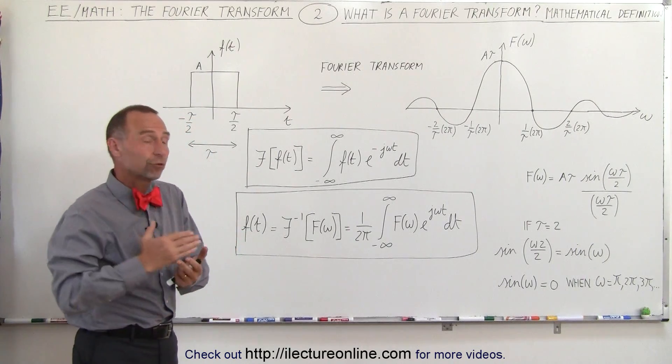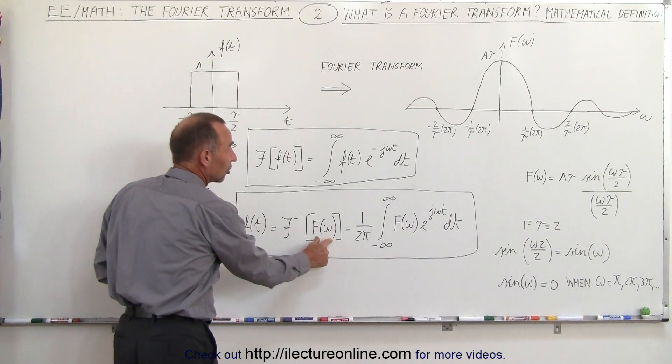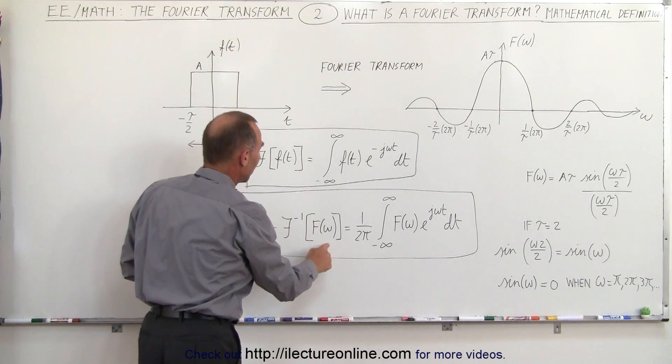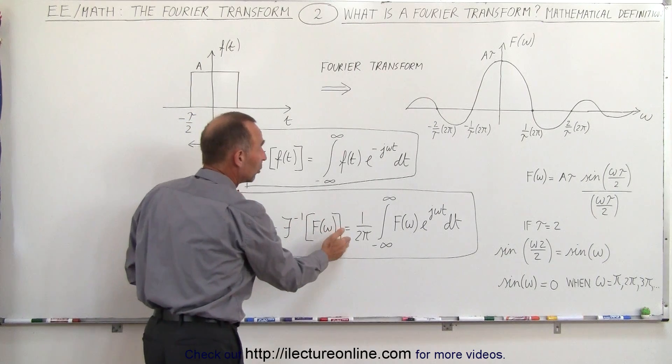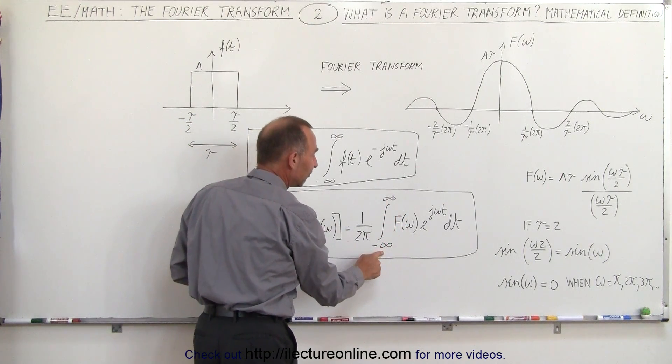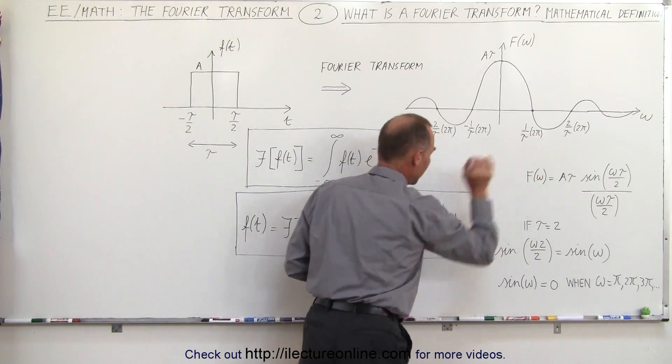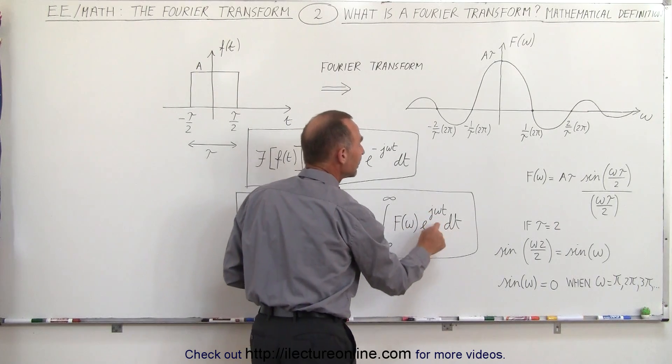We can also take the inverse Fourier transform to get the function back. We start with a function that is in the frequency domain we need the inverse Fourier transform which is equal to 1 over 2 pi times the integral from minus infinity to infinity of the function in the frequency domain times e to the j omega t dt.